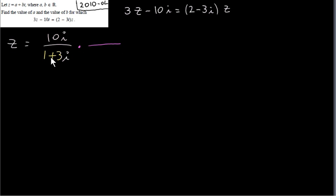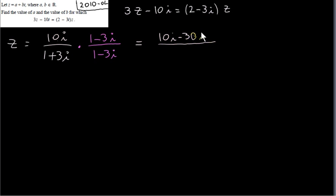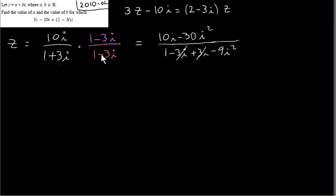We multiply above and below by the conjugate of the denominator. The conjugate of 1 plus 3i is 1 minus 3i. In the numerator: 10i times 1 is 10i, and 10i times minus 3i is minus 30i squared. In the denominator: 1 times 1 is 1, minus 3i and plus 3i cancel out, and plus 3i times minus 3i is minus 9i squared. The imaginary parts in the denominator cancel — that always happens when multiplying a complex number by its conjugate — giving a real number in the denominator.